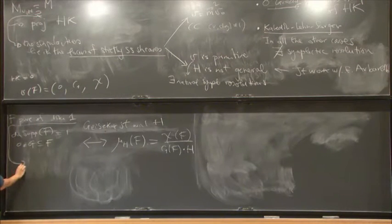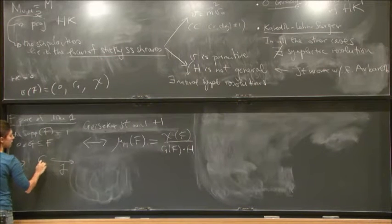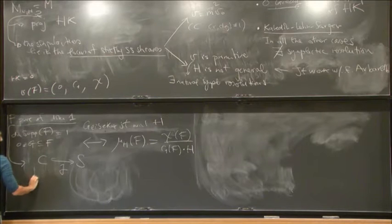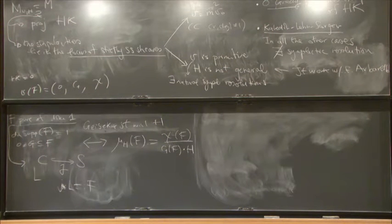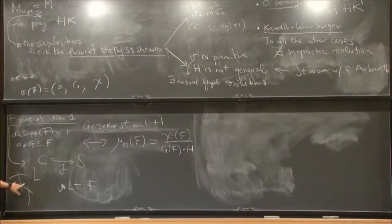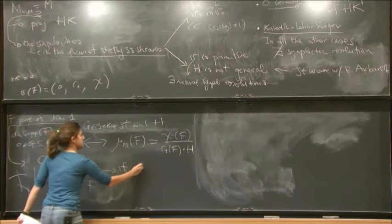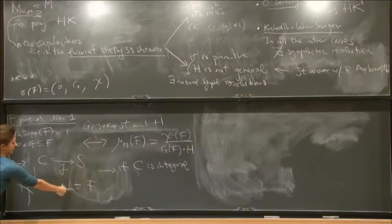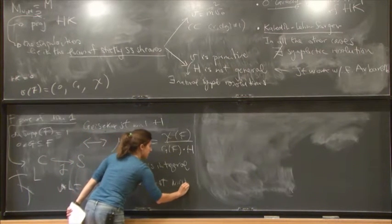The typical example of a pure dimension one sheaf on a surface is the following. If j is the inclusion of a curve C in S, and L is any torsion-free rank one sheaf on C — a line bundle — then the sheaf F = j_* L is pure of dimension one. I don't ask that F has no torsion, because if C had several components there would be torsion, but all the torsion is supported on one-dimensional supports. In particular, if C is integral and F is of this form with rank one on C, then F is stable with respect to any H.